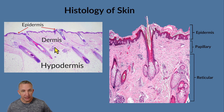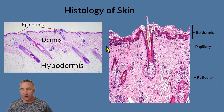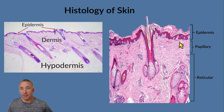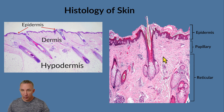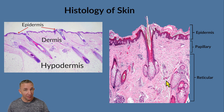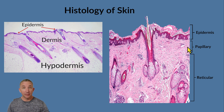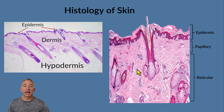Going deeper into the dermis, we're now in connective tissue. Just deep to the epidermis is the papillary layer of the dermis, which is areolar connective tissue. Continuing deeper, the rest of the dermis is the reticular layer, which is dense irregular connective tissue. So the dermis has two layers: papillary (areolar CT) and reticular (dense irregular CT).